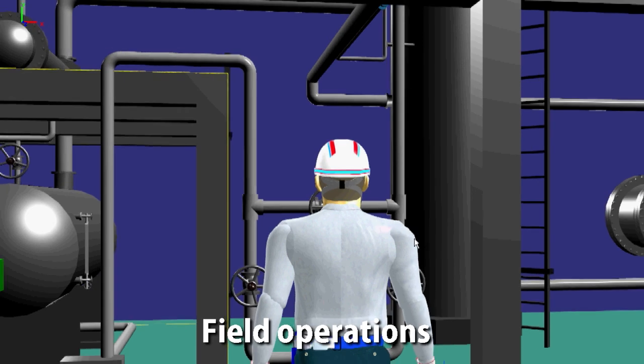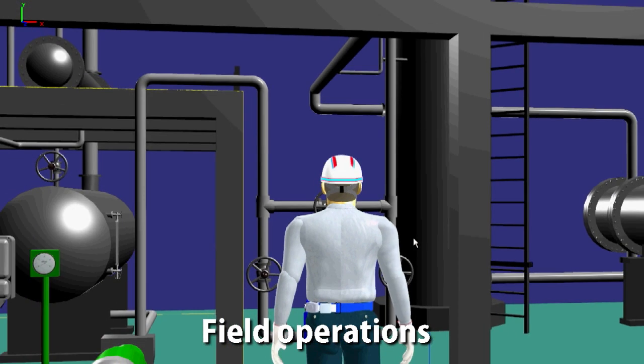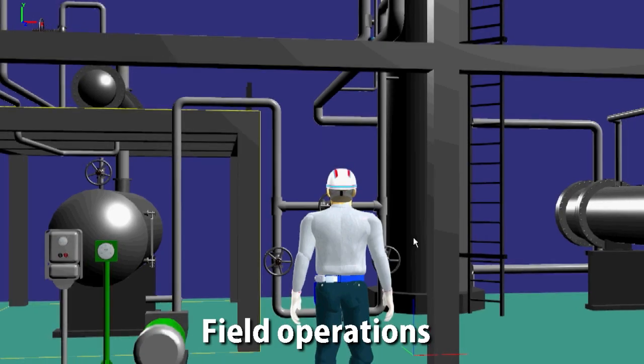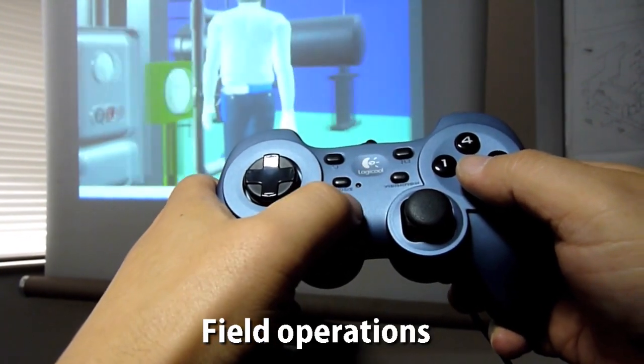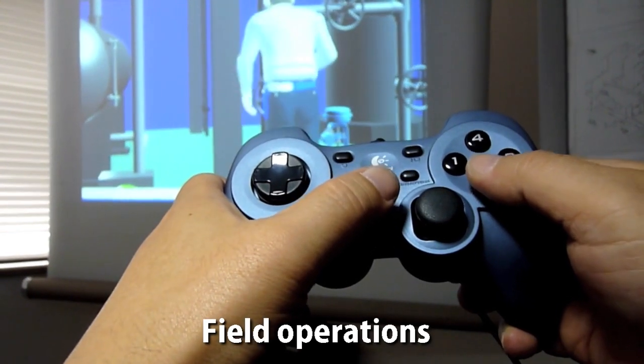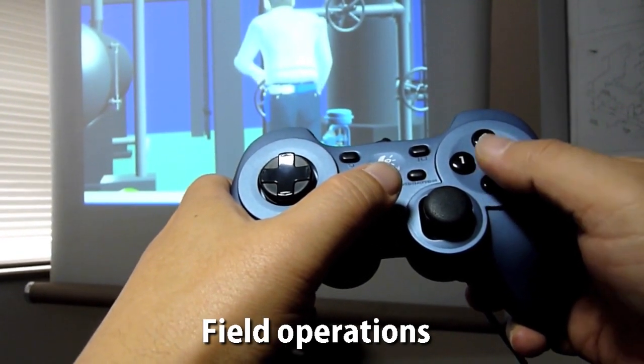With 3D technology, we model the real sites. While operating with a controller, you can make the field operations with moving avatars, for example, opening and closing valves and activating pumps.